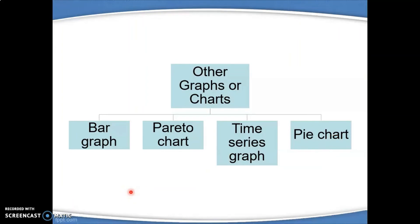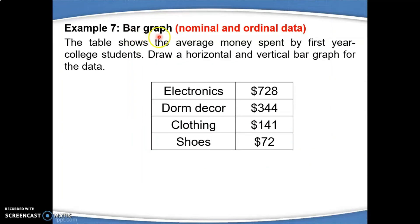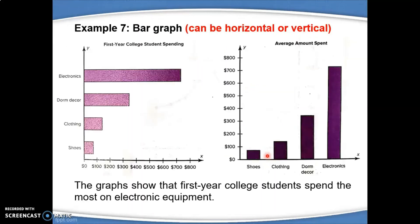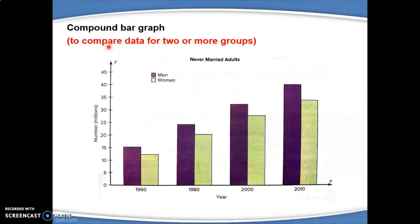In this section, I will discuss other graphs or charts such as bar graph, Pareto chart, time series graph, and pie chart. Bar graph is used to represent nominal and ordinal data. For example, using nominal data with categories like electronics, dorm décor, clothing, and shoes with the amount of money spent, the bar graph can be drawn horizontally or vertically. Bar graph is similar to histogram except it applies only for nominal data, meaning the X or Y axis must show items or subjects, not numerical values. You can also build a compound bar graph to compare data for two or more groups.